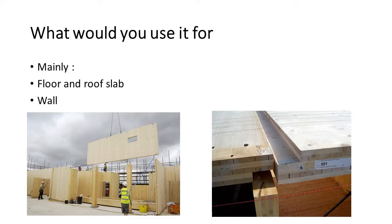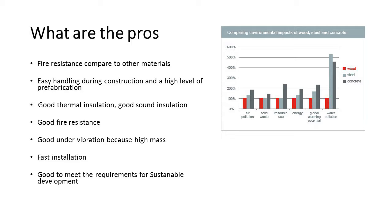Looking at the pros: CLT offers good fire resistance compared to other materials, easy handling during construction, and a high level of prefabrication that facilitates project completion in mid-rise construction, for example five to eight stories. It also features good thermal insulation, good sound insulation, and good performance under fire — all benefits that come as a result of the massive wood structure.